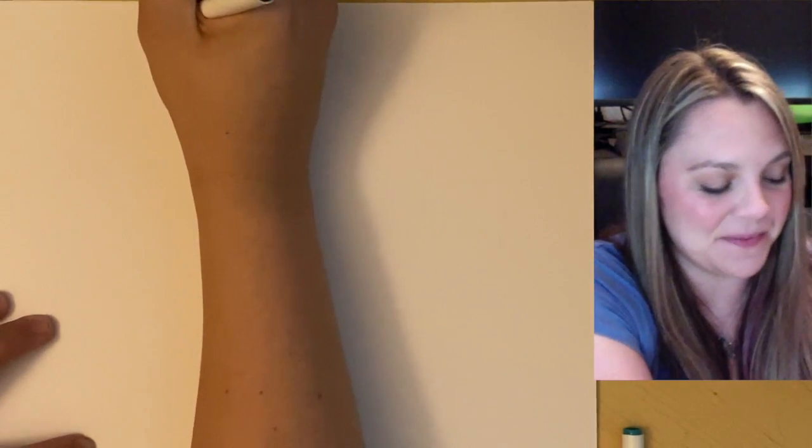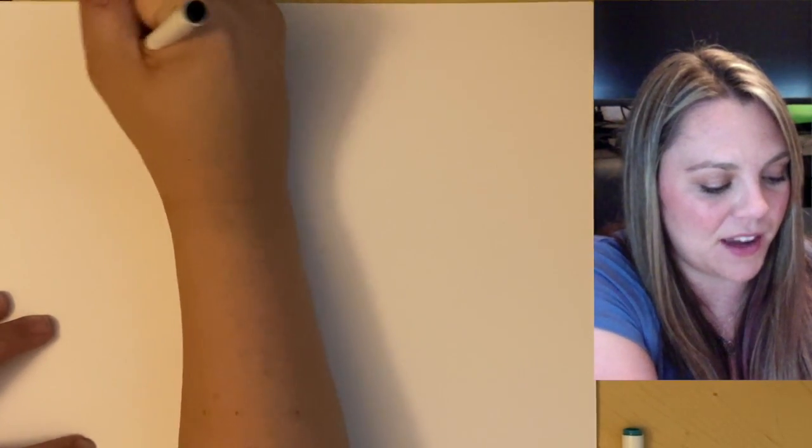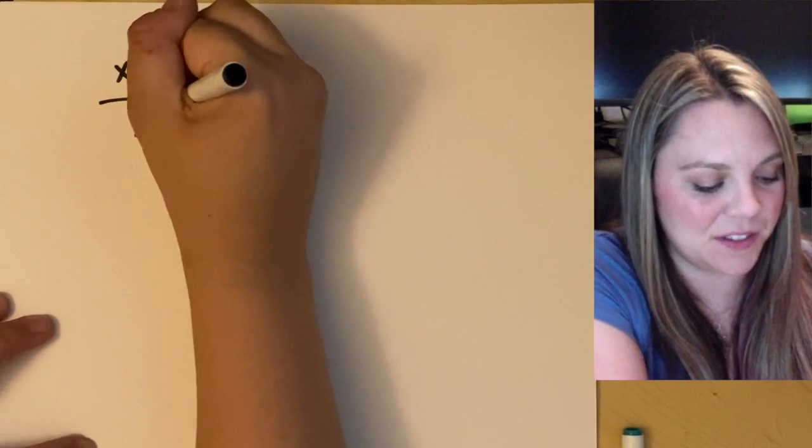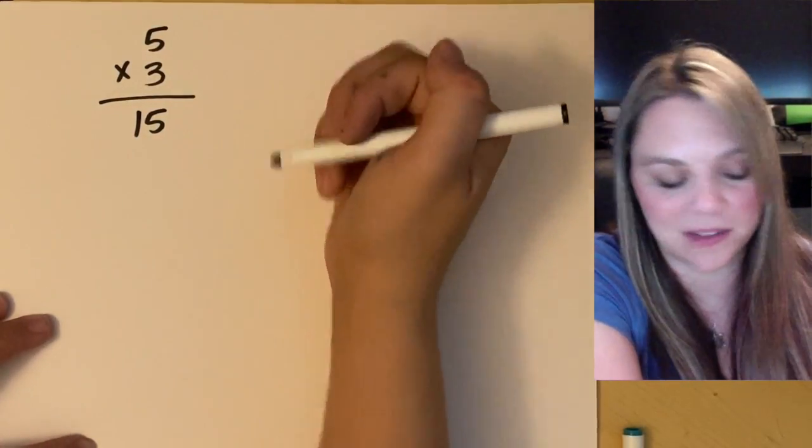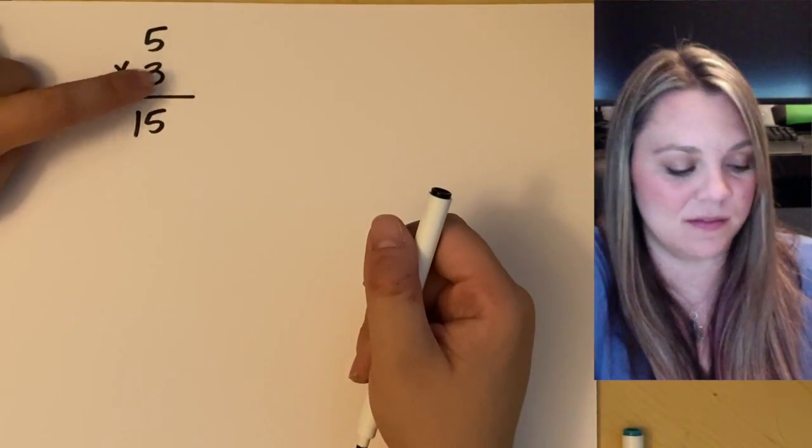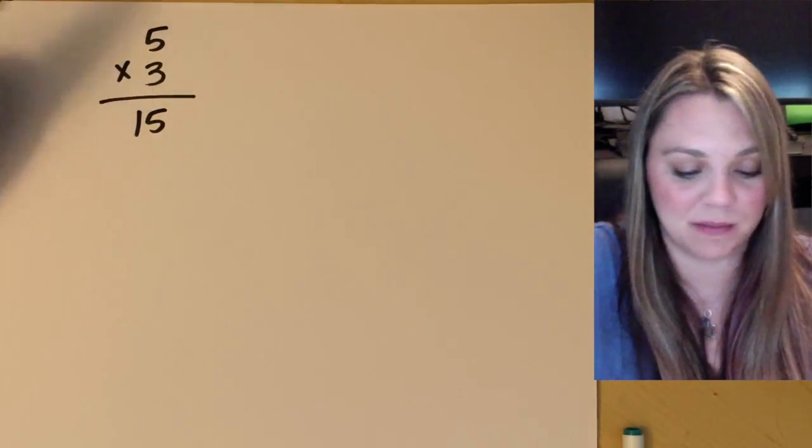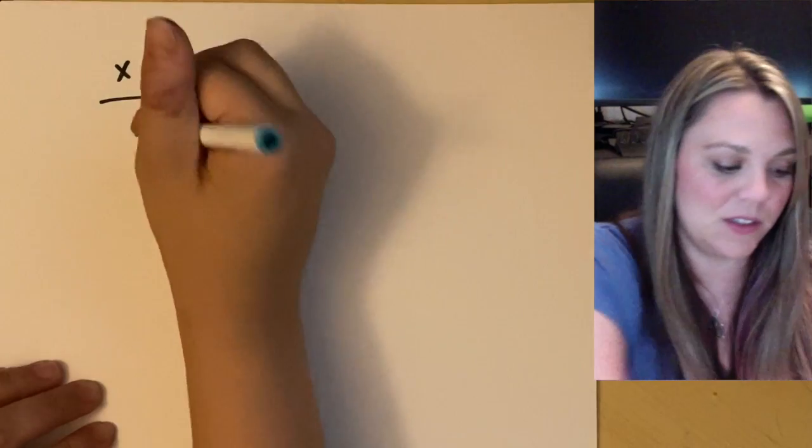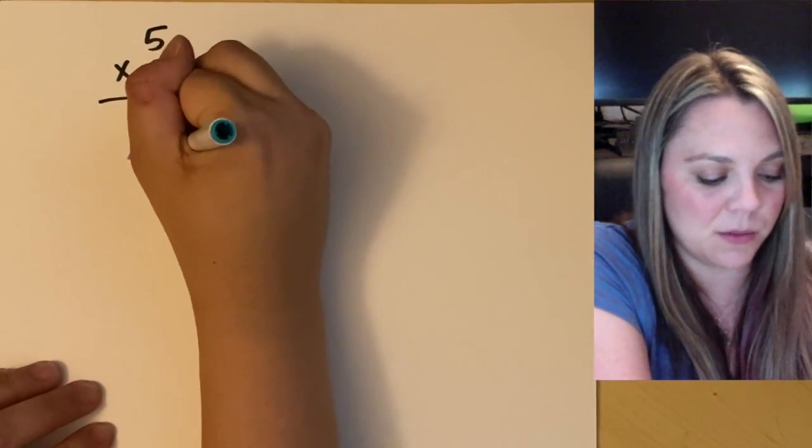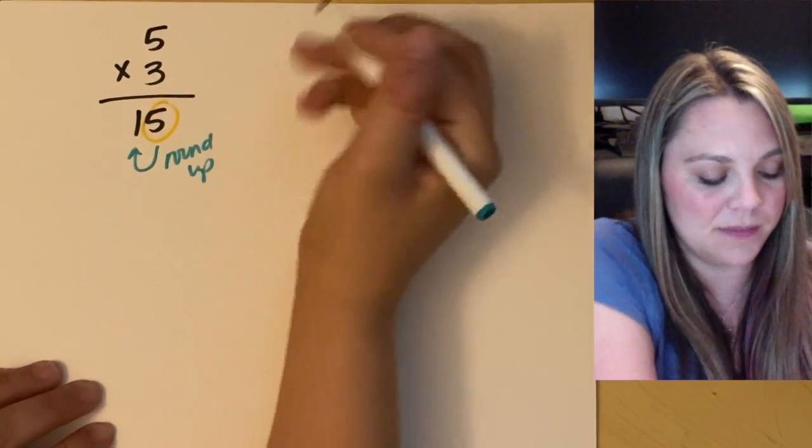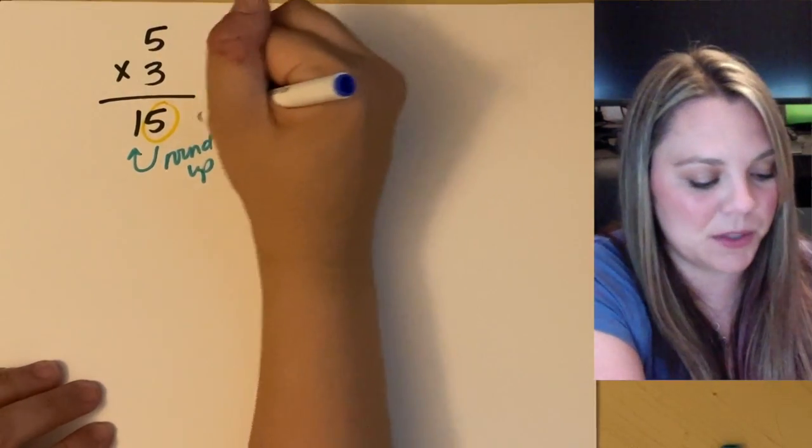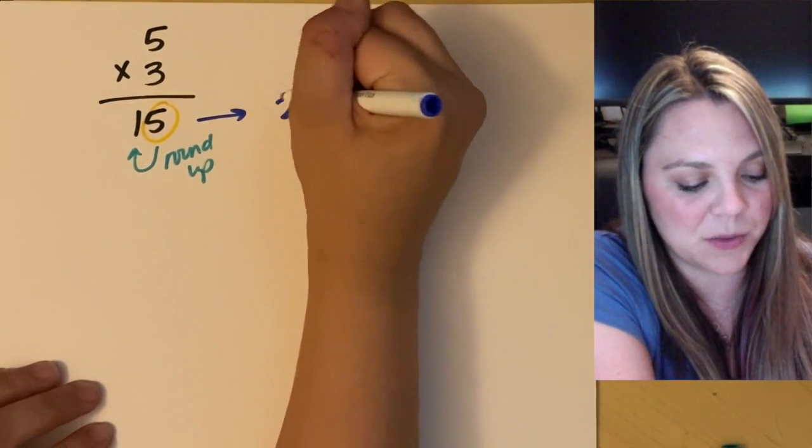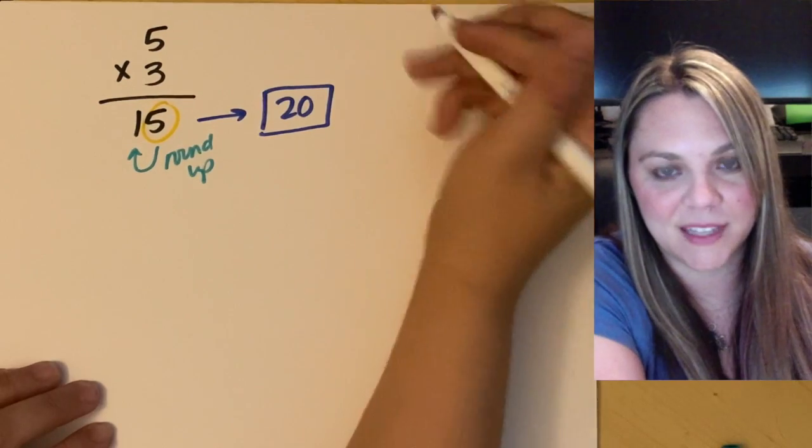A couple more examples. One I definitely like would be if I had five times three is 15, except not really, right? This has one sig fig, this has one sig fig. My answer can only have one sig fig. So the five is going to make the one round up. So you got it. Five times three is actually 20 in chem.